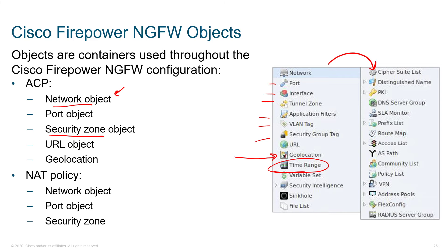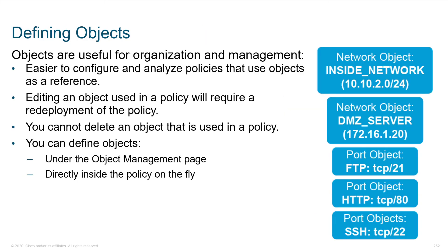URLs can be contained in objects. And then these objects, once they're created, can be used within our access control policy. They'll also be used within our NAT policy. The process of defining objects is pretty straightforward — you give it a name and then you define what the parameters are. Network objects are typically things like IP addresses and subnets, and port objects tend to be things like a protocol and a port number.